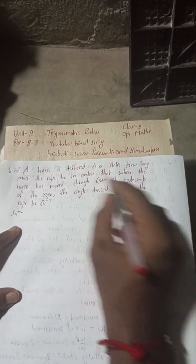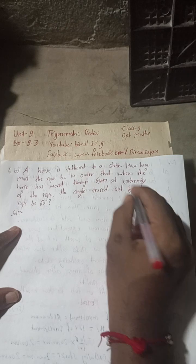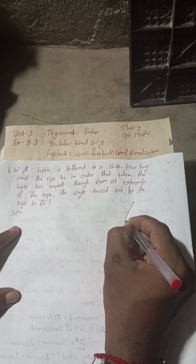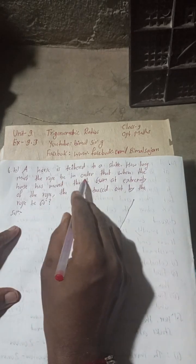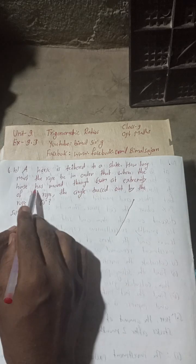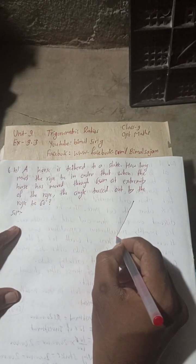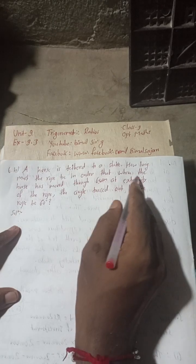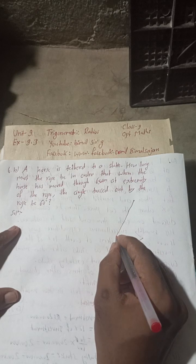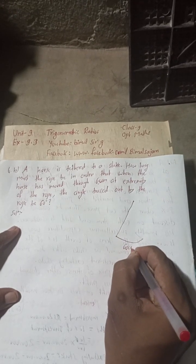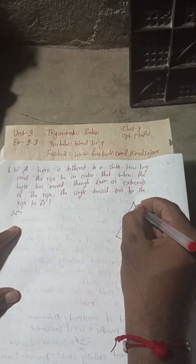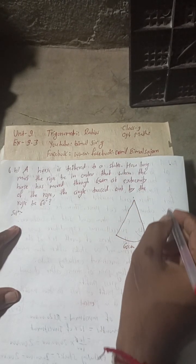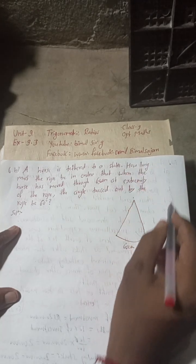A horse is tethered means suppose this is point O. It is tethered to a stake. How long must the rope be? Suppose this is the rope. In order that when the horse has moved through 60 cm, so 60 cm is moved this way. Suppose the horse has moved through 60 cm from here to here. Then if you join this, this will be equal to this rope, because the rope is tied. When it takes a complete rotation, this will form one circle.